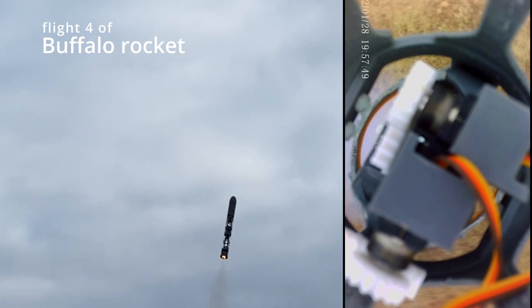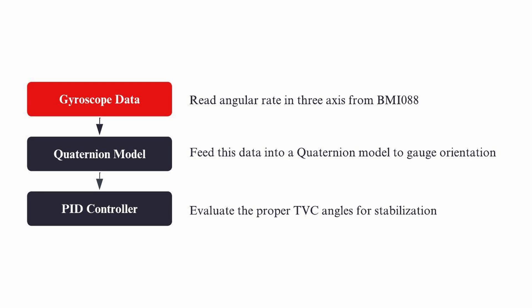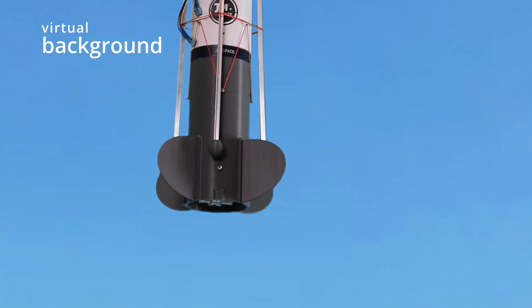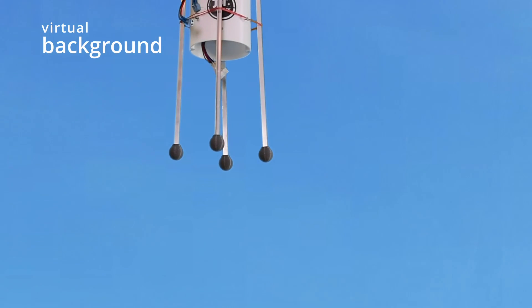The first stage actively stabilizes the rocket using gyroscope data that is translated into 3D orientation, which is then fed into a PID controller. Following engine burnout, the ascent stage separates and recovers safely.